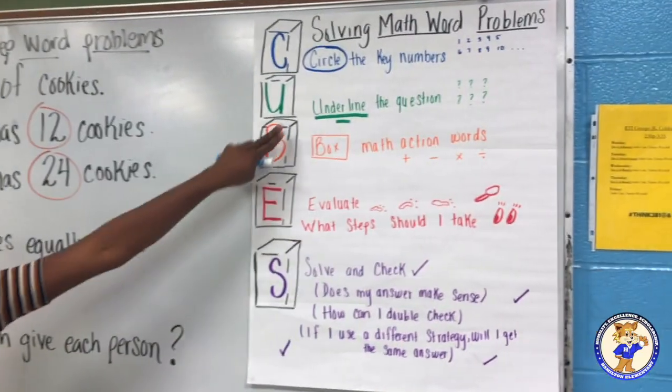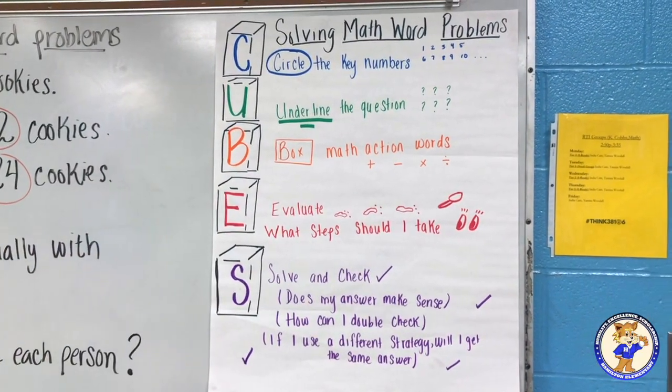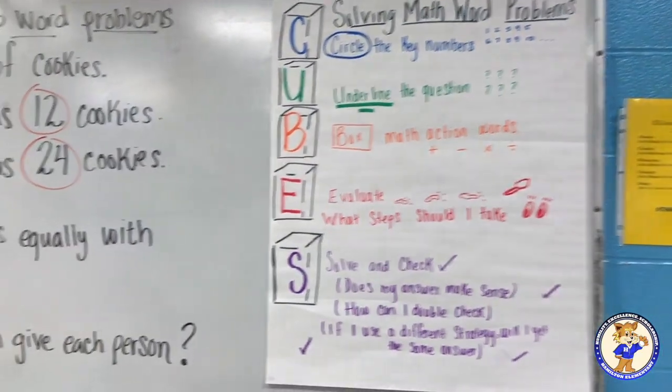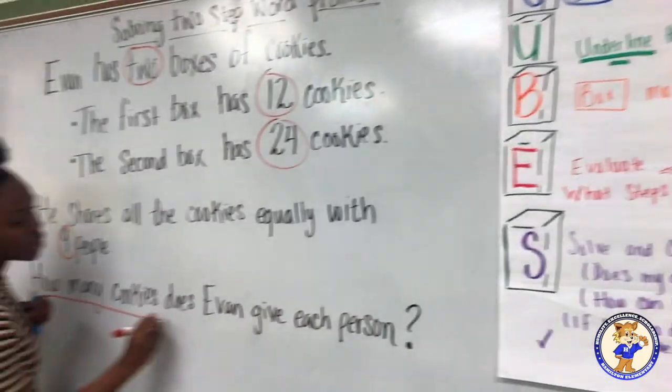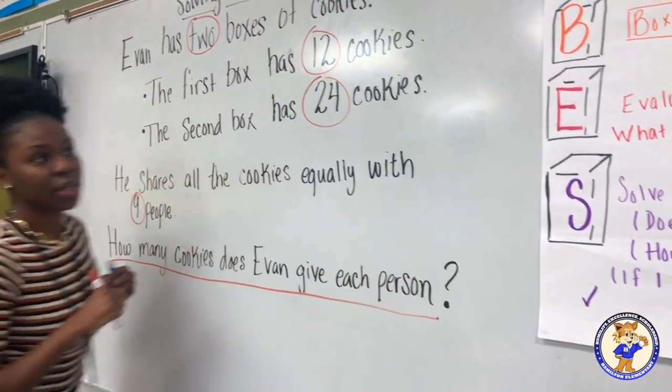Our second step is to underline the question. Our question is: how many cookies does Evan give each person?